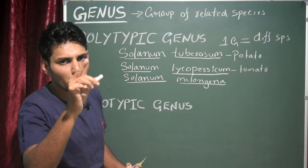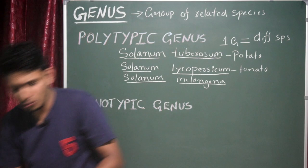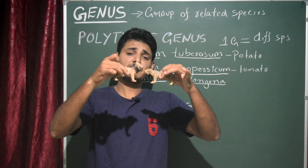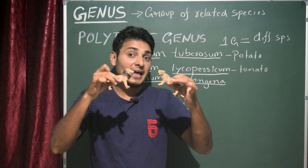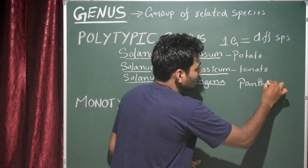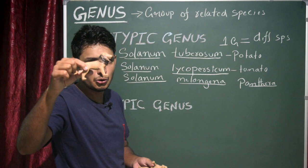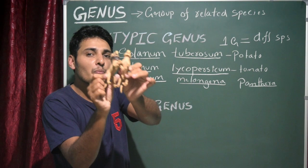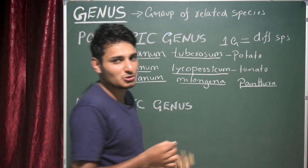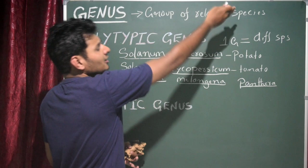One more example: the lion and the tiger. The scientific name of the lion is Panthera leo, and the tiger is Panthera tigris. What is common? Panthera is common. This genus contains different types of species — leo is one species and tigris is another. But they share common features, so they belong to the same genus Panthera. This is another good example of a polytypic genus.